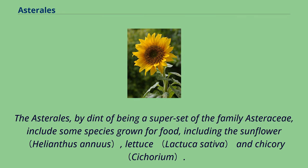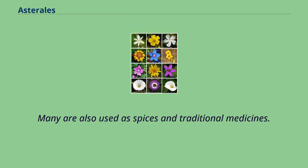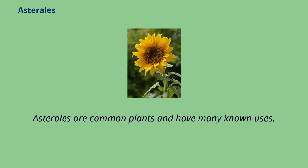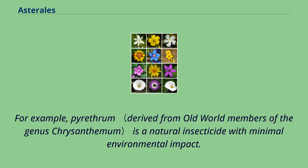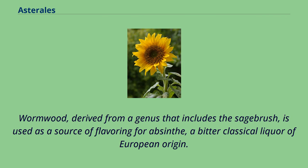The Asterales, by dint of being a superset of the family Asteraceae, include some species grown for food, including the sunflower, lettuce, and chicory. Many are also used as spices and in traditional medicines. Asterales are common plants with many known uses. For example, pyrethrum is a natural insecticide with minimal environmental impact. Wormwood, derived from a genus that includes the sagebrush, is used as a source of flavoring for absinthe, a bitter classical liquor of European origin.